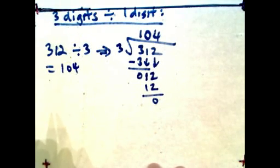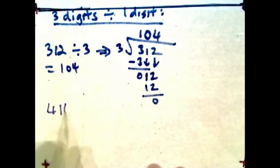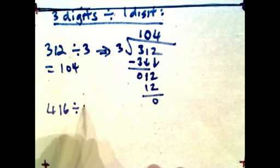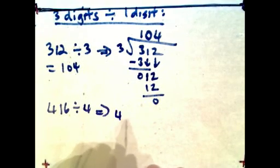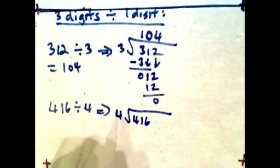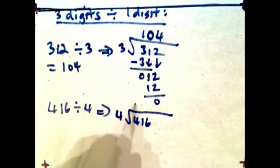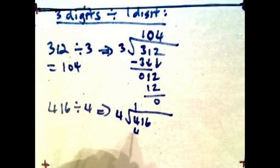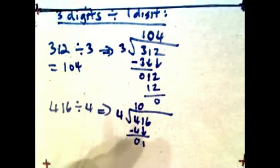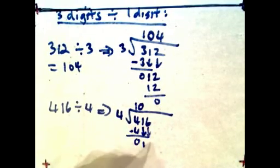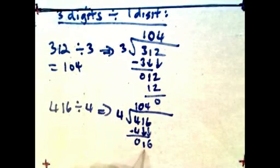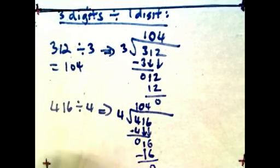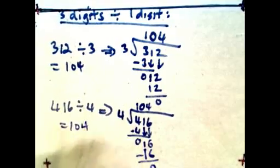Let's do another one: 416 divided by 4. Set it up as 4 divided into 416. 4 goes into 4 once — 1 times 4 is 4, minus the difference, that's 0. Bring down the 1. Again, we can't go into 1, so use 0 as a placeholder. Bring down the 6, so that's 16. 4 goes into 16 — 4 times 4 is 16, minus the difference is 0. So the answer is 104.